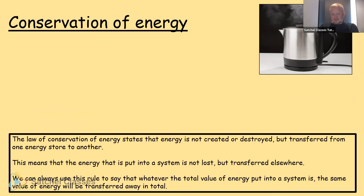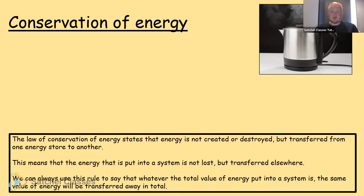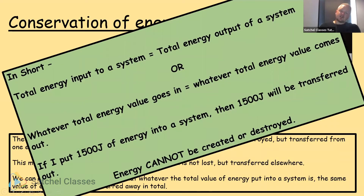The law of conservation of energy states that energy is not created or destroyed, but transferred from one energy store to another. Whatever energy is put into a system, it's not lost — it's just transferred to a different store. So the total energy input to a system equals the total energy output. If I put 100 joules of electrical energy into a kettle, 100 joules of heat, light, and sound energy will be emitted from it.